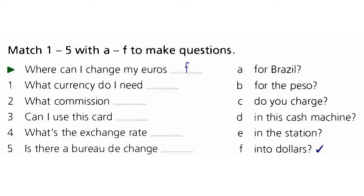We have some exercises. Let's do them together. Number one: match 1 to 5 with A to F to make questions. For example, where can I change my euros — goes to F — into dollars? The answers: what currency do I need goes to A for Brazil; what commission goes to C do you charge; can I use this card goes to D in this cash machine; what's the exchange rate goes to B for this peso; and is there a bureau de change goes to E in this station?